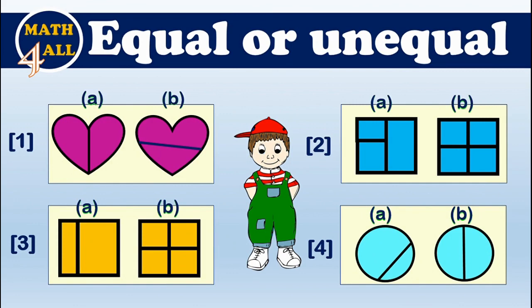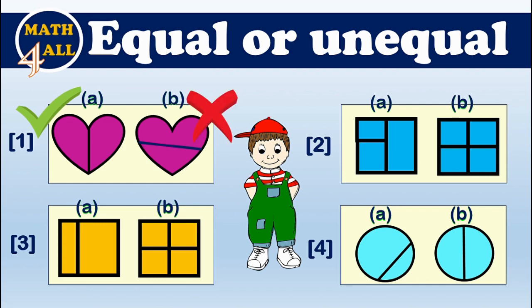Now let's practice more. Equal means a fraction; unequal means not a fraction. Example one: here we have two hearts. One of them is broken into two equal parts, so it's a fraction. The other is broken into two unequal parts, so it's not a fraction.